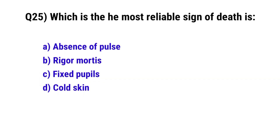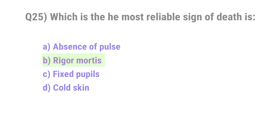Question number twenty-five: Which is the most reliable sign of death. The correct option is B, rigor mortis.